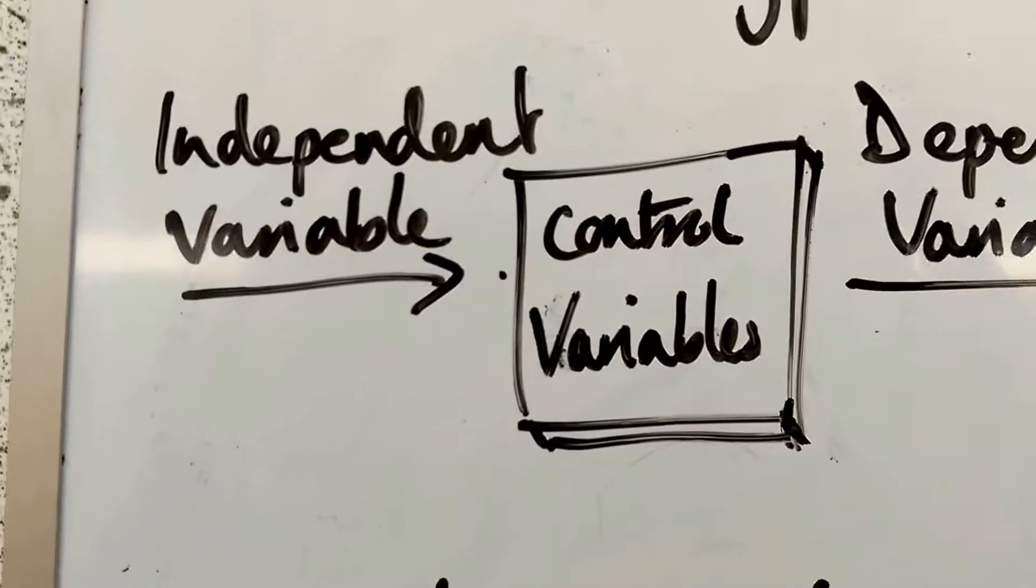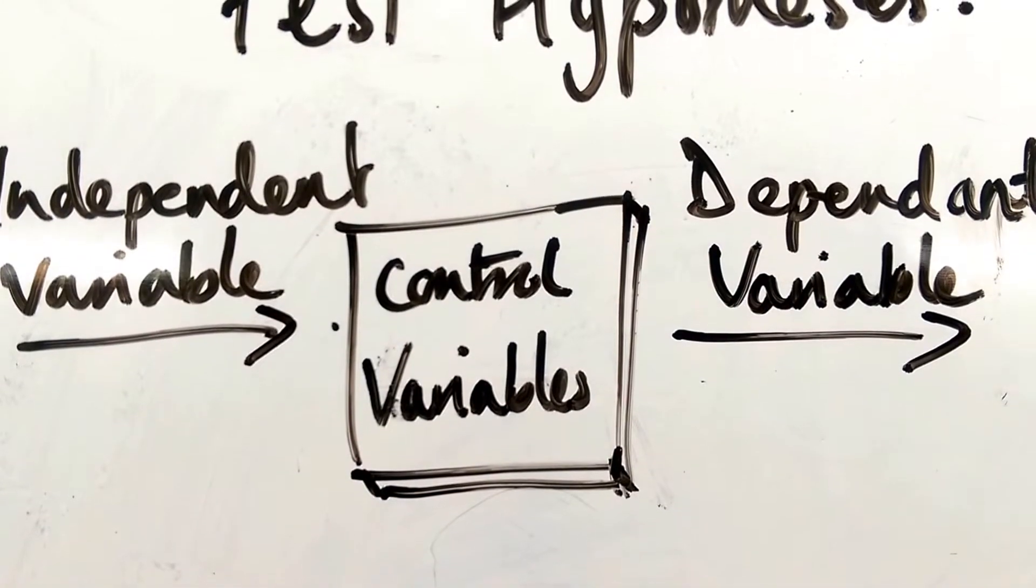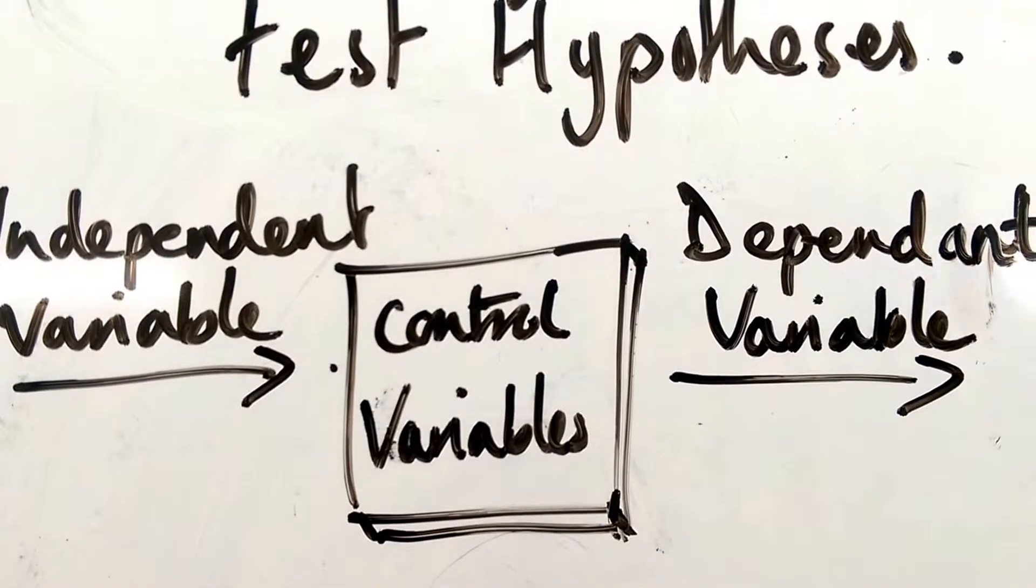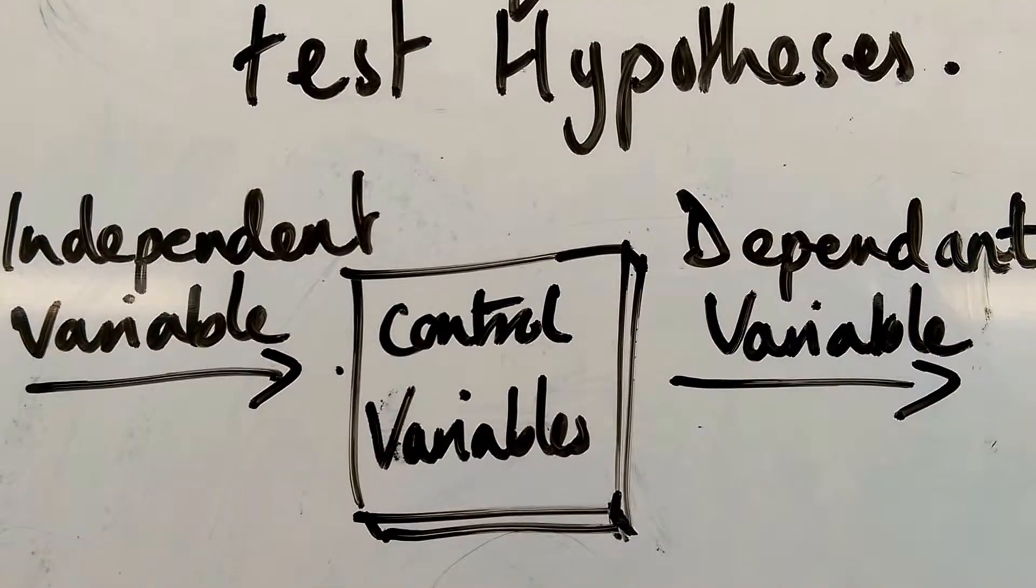We call that, what we put in, the independent variable. And the number we get out, the variable we get out, is the dependent variable.